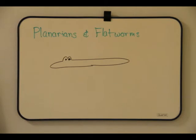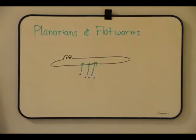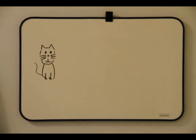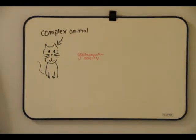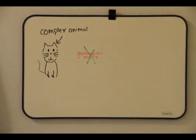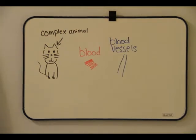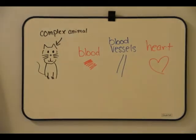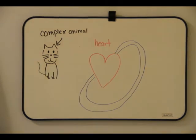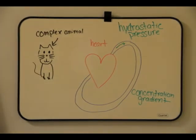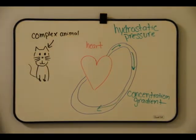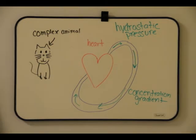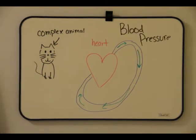Planarians and flatworms also have gastrovascular cavities that exchange materials with the environment. In most complex animals, a gastrovascular cavity is insufficient, and they have circulatory systems made up of blood, blood vessels, and a heart. The heart uses the hydrostatic pressure of the blood, which flows down a concentration gradient through its circuit and then flows back to the heart. This force is also known as blood pressure.